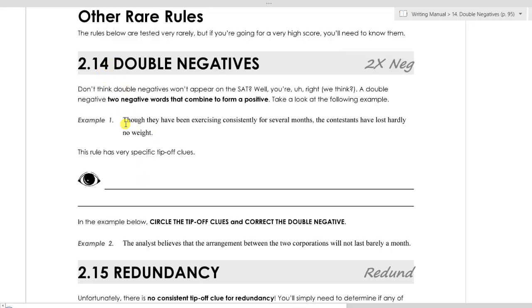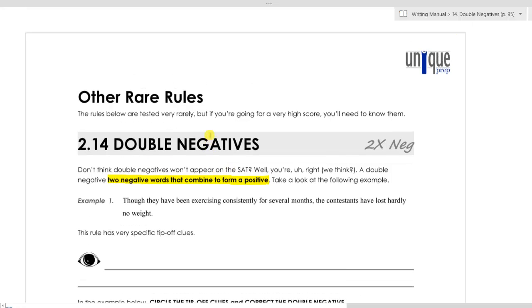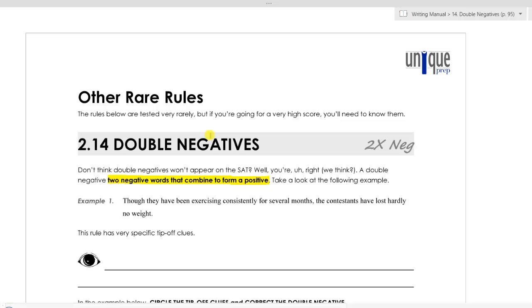What is a double negative? A double negative is exactly what it sounds like. It is when two negatives, a double negative, combine to form a positive. So if I say something like, I didn't not study for the test, that means that I did study for the test. I didn't not study. This not and this not, those two negatives combine to form a positive.